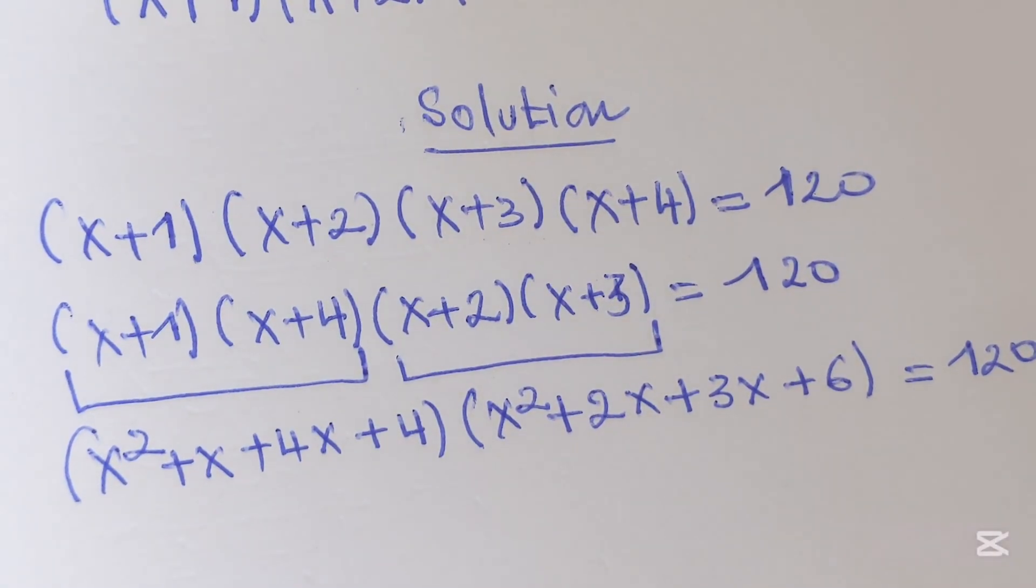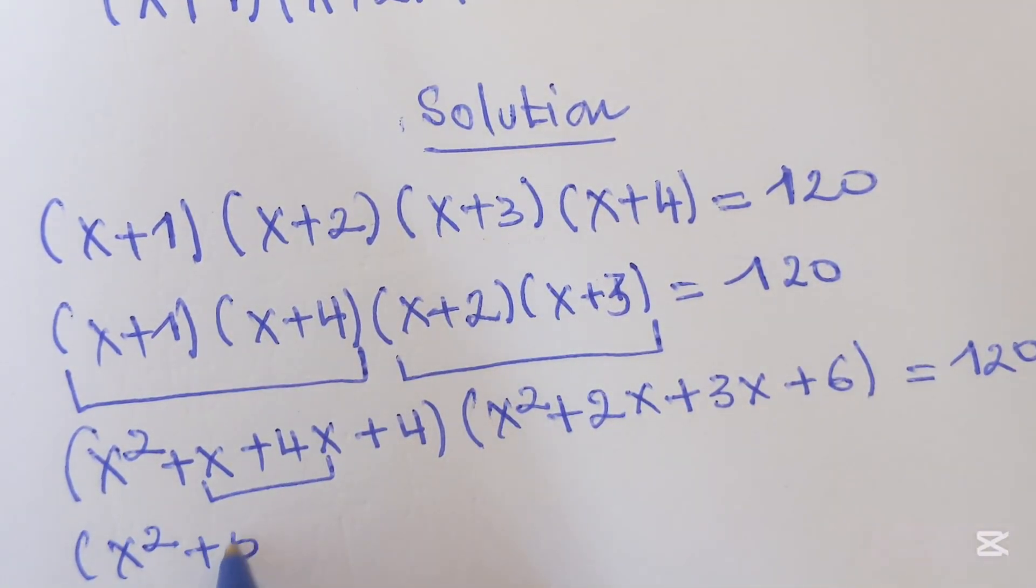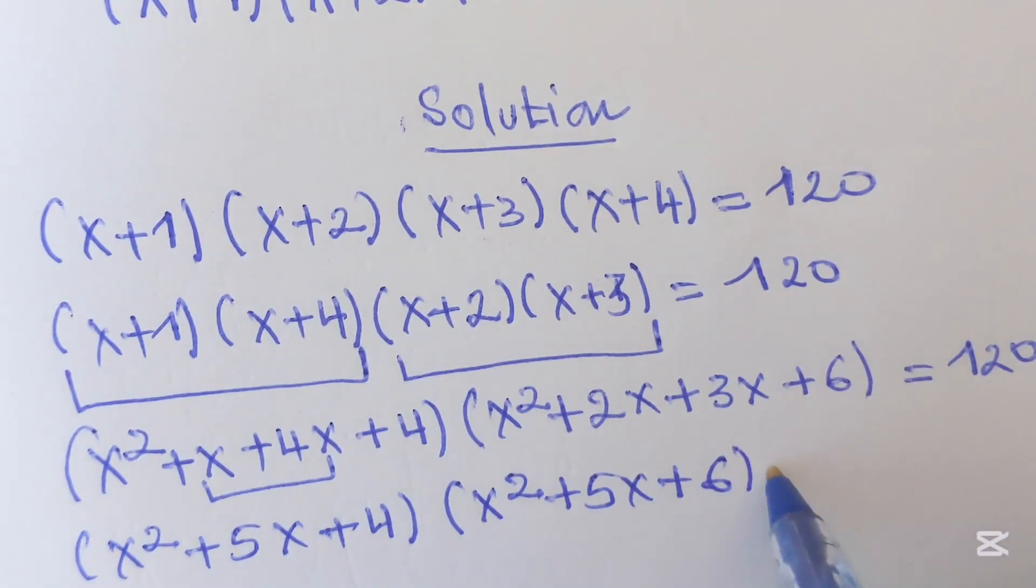Now what can we do? Here we have x squared, and this will provide plus 5x, then plus 4, and here we have x squared plus 5x plus 6, which equals 120.